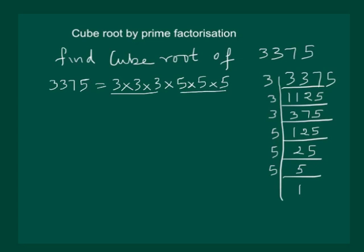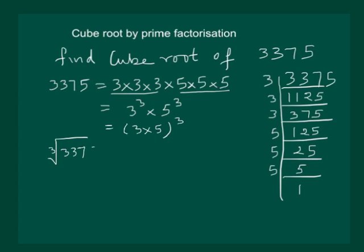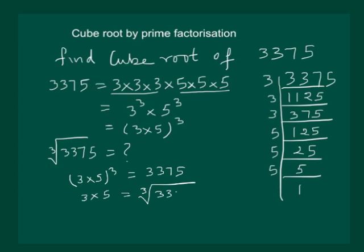We make groups of 3. Now we have 3 cubed × 5 cubed, which can also be written as (3 × 5) whole cubed. Now, cube root of 3,375 is what we have to find. We have (3 × 5) whole cubed = 3,375, so this means 3 × 5 = cube root of 3,375. And that means 15 is the cube root of 3,375.